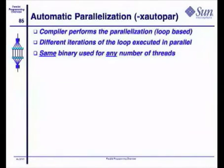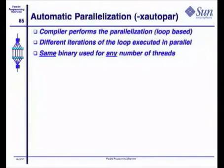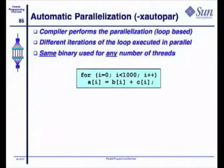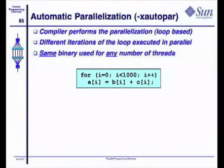And that's all we need to do. We tell the system how many threads we want to use, and the runtime system will handle the rest. That gives me one binary, one parallel binary, and I can run that on any number of threads that I like. Here's a simple example. I have a loop calculating A equals B plus C. I do that in a loop structure with a thousand iterations.